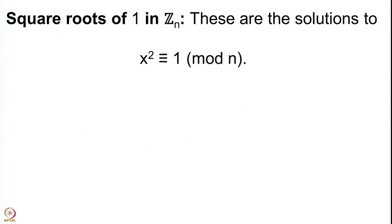In general it is not easy to give the solutions to the equation x² = 1 in Z_n, but what we can definitely do is compute the number of solutions. What we want to do to begin with is to compute the number of solutions to x² ≡ 1 (mod n). These are the square roots of 1 in Z_n — the square roots of the identity element in Z_n.